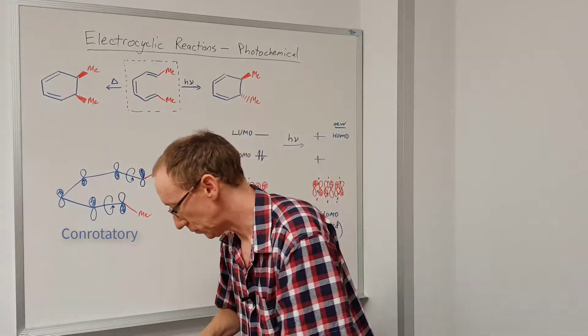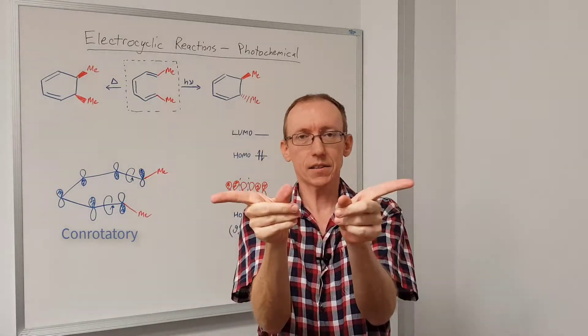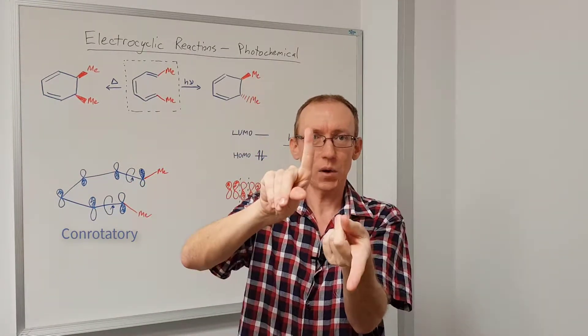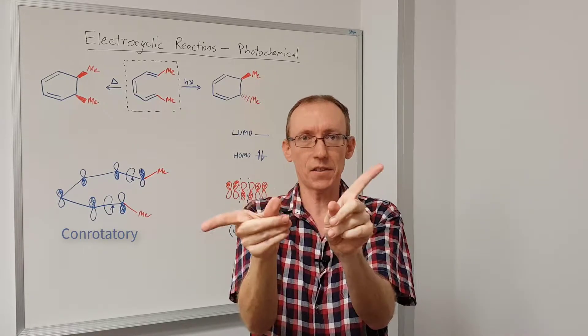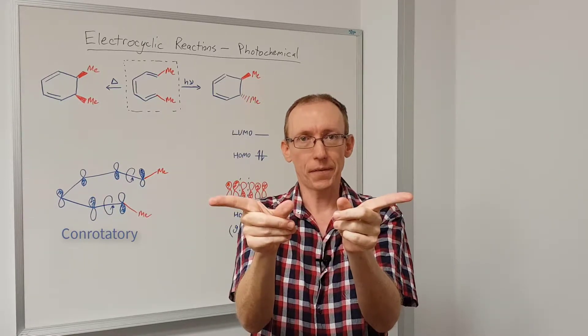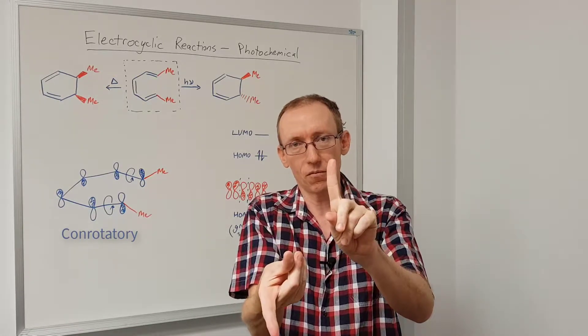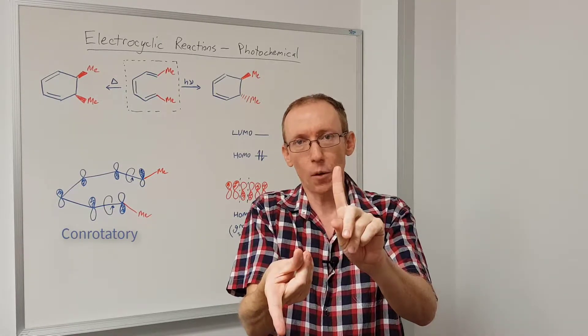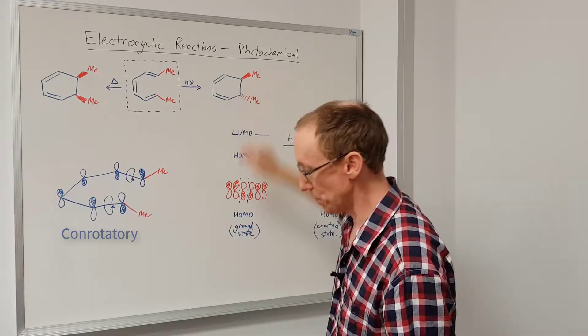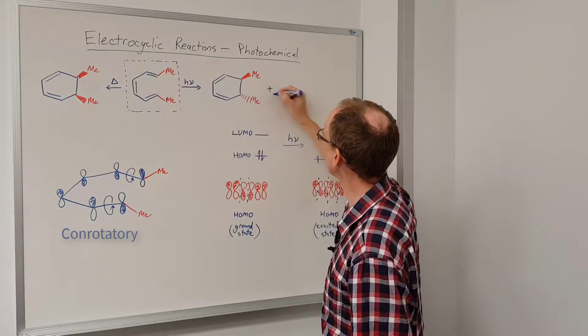So if they're like this, and we rotate this way, they're going to be on opposite sides to give that enantiomer. Whereas if they rotate the opposite way, but still in the same direction, we're going to get the opposite enantiomer. So we'll get this molecule plus its enantiomer.